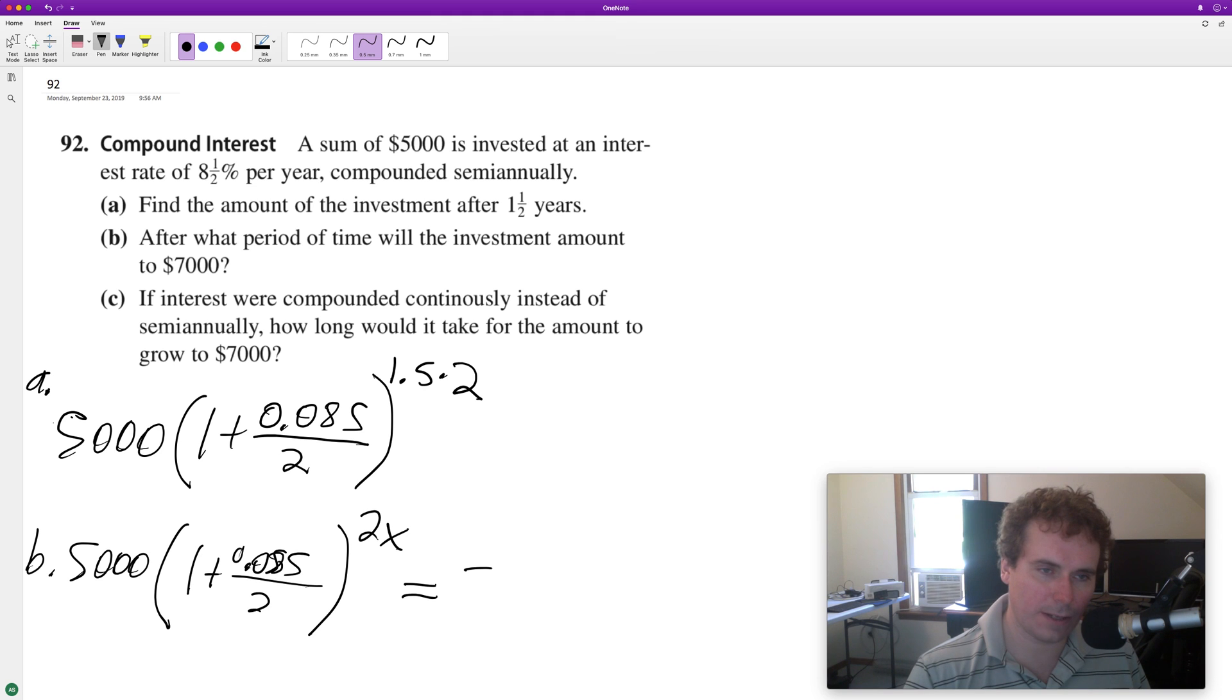If interest is compounded continuously instead of semi-annually, how long will it take to reach $7000? For that we just do $5000 times e raised to the 0.085x equals $7000.